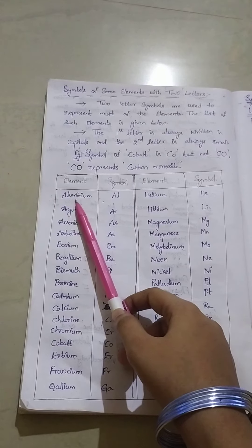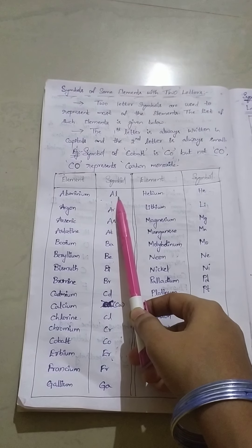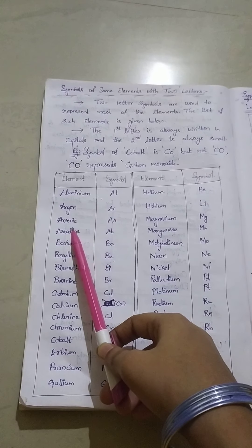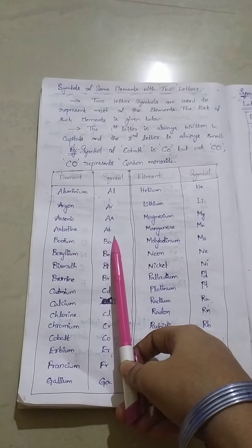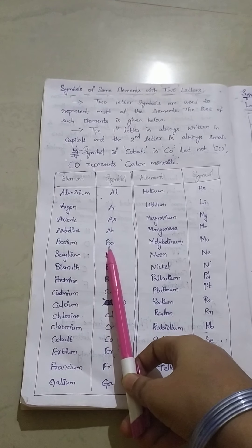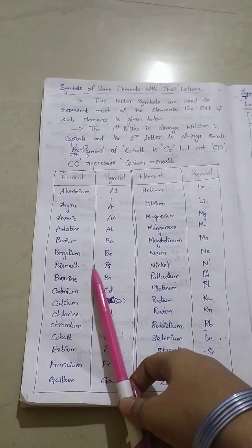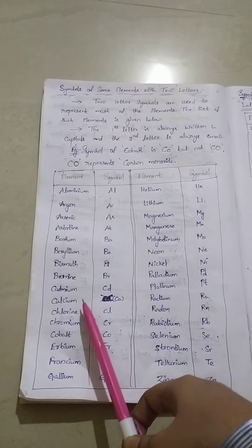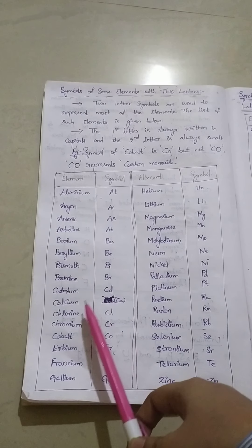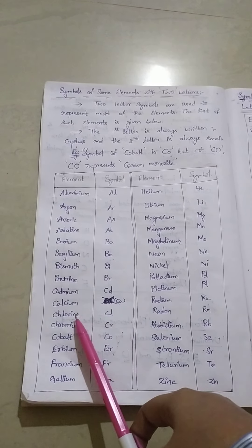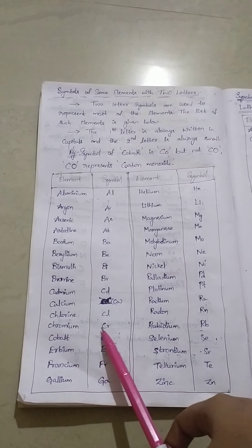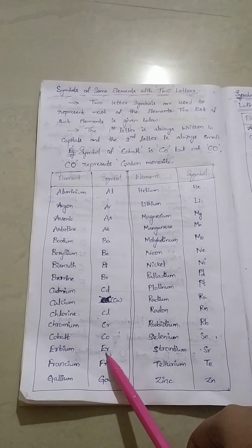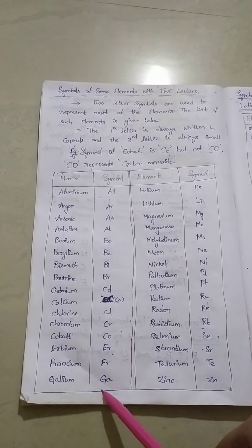Aluminum has a symbol of AL. Likewise, argon has symbol AR, arsenic as AS, astatine as AT, barium as BA, beryllium as BE, bismuth as BI, bromine as BR, cadmium as CD, calcium as CA, chlorine as CL, chromium as CR, cobalt as CO, erbium as ER, francium as FR, gallium as GA.